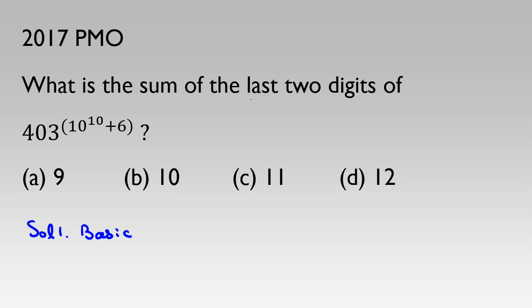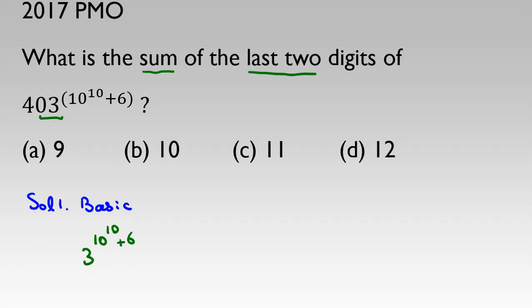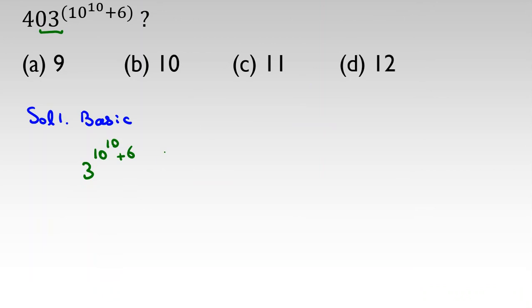For 403, we should find last two digits and then add them up together. When the problem says last two digits, only the last two digits of 403 are important, which is 03 or 3. So I should focus on last two digits of 3 to the 10 to the 10 plus 6. I should focus on powers of 3 and what the last two digits are. For example, 3 squared is 9, 3 to the 4 is 81. So 3 to the 4, last two digits equal to 81.